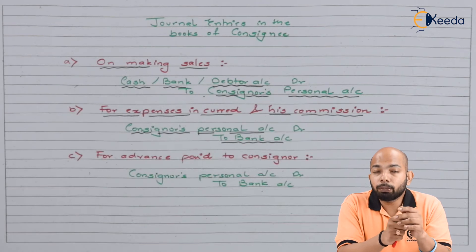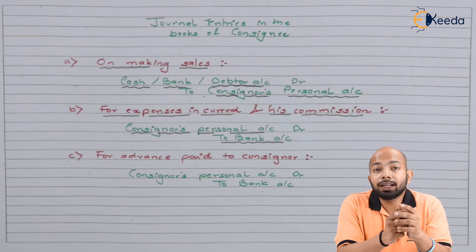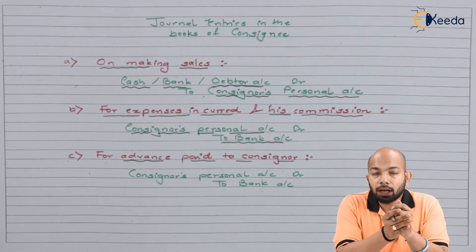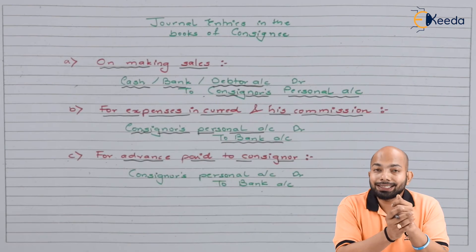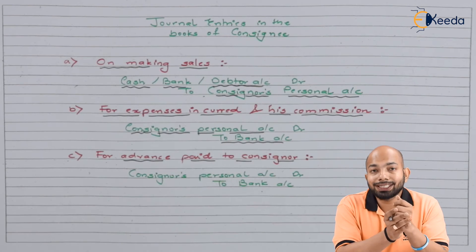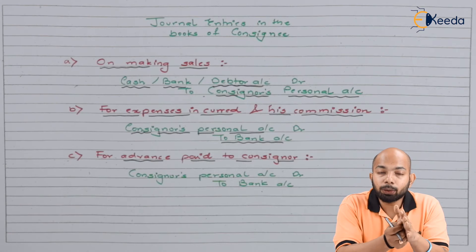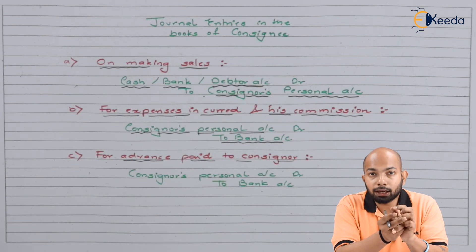The next entry is when an advance is paid to the consignor. From the consignee's point of view it is an expense, so the entry will again be consignor's personal account debit to bank account.